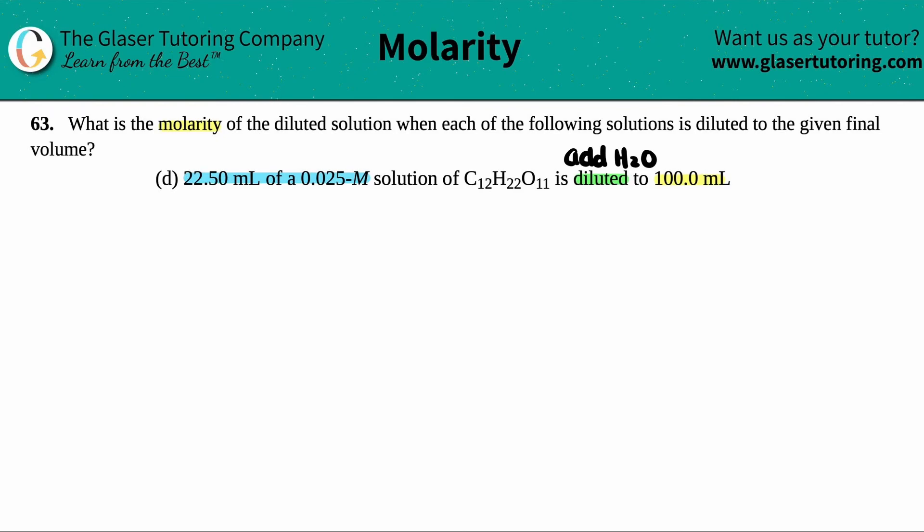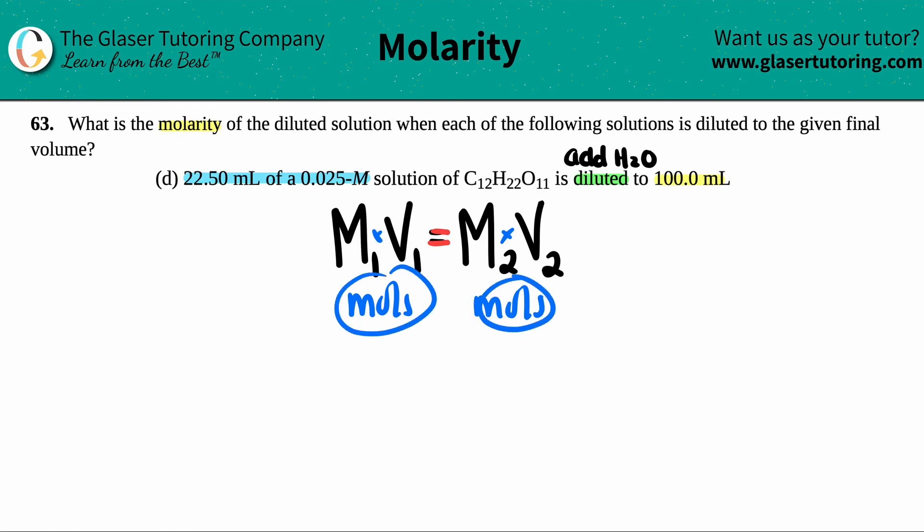The dilution formula is M1V1 equals M2V2. We just need to find out what the pairs are. We have one paired molarity and volume that equals molarity and its corresponding volume after the dilution. Just know that the only thing that's actually equal is the number of moles. When you dilute something, the moles do not change. Molarity times volume is moles, so that's really what's the same here. The mole amount never changes when you add water or dilute something.